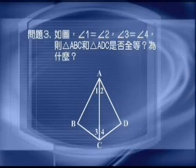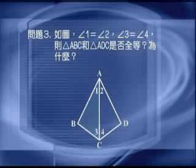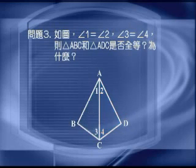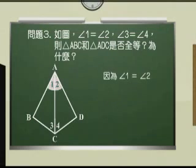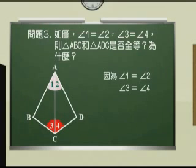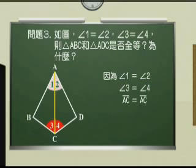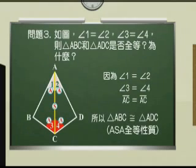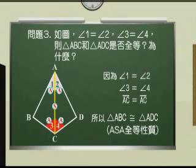问题三如图，角1等于角2，角3等于角4，则三角形ABC和三角形ADC是否全等？为什么？因为角1等于角2，角3等于角4（已知条件），线段AC等于线段AC（共用边），所以根据ASA全等性质，三角形ABC全等于三角形ADC。